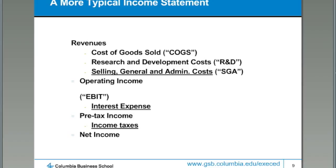The income statement breaks expenses into categories: what are the costs of the products you're selling, what's the cost of your research and development, what are your selling and administrative costs, if you're borrowing money what's your interest expense, and if you are paying taxes what's your income tax bill.